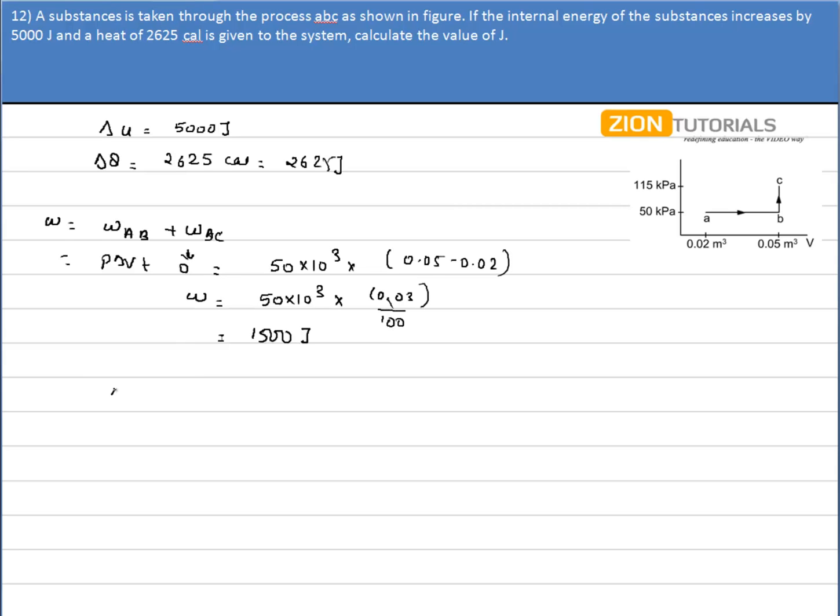Delta Q is equal to delta U plus work done. So it gives me 5000 J minus 2625 J is equal to 1500. Solving this equation for J, I get the value of J as 4.19 J per calorie.